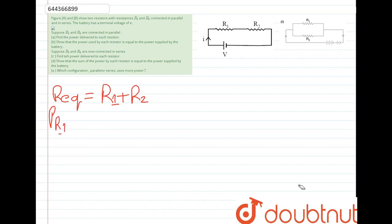P R1 is how much? I square R1. I square is V square by R equivalent, which is R1 plus R2. So V square R1 over R1 plus R2 whole square.